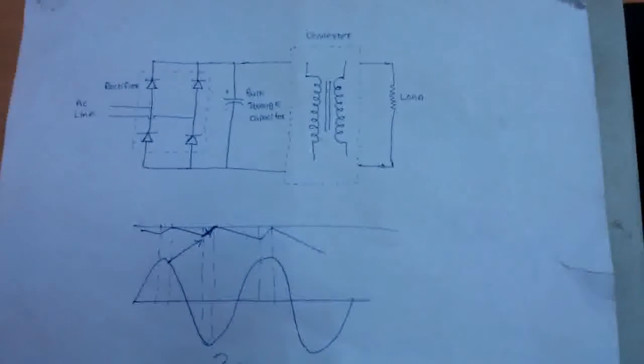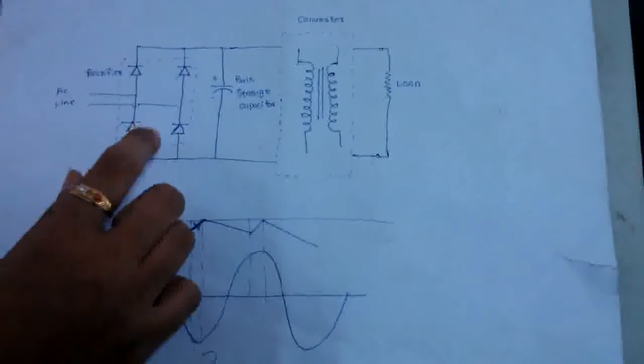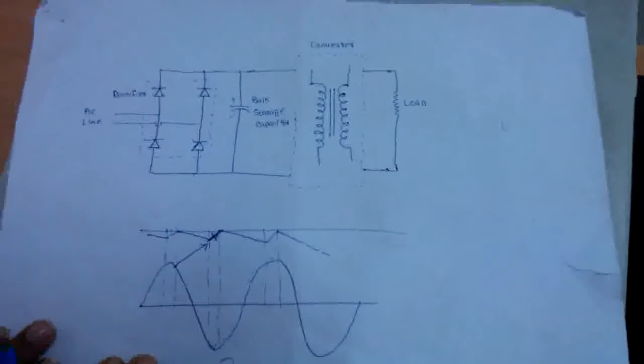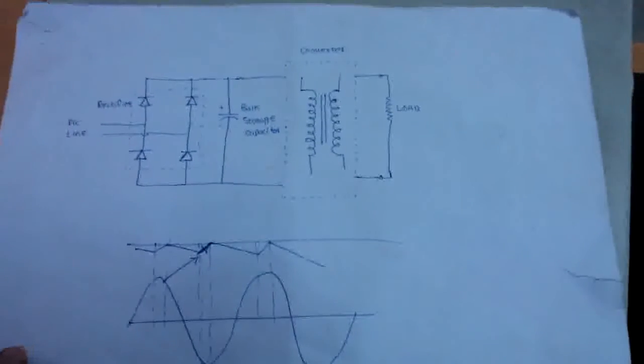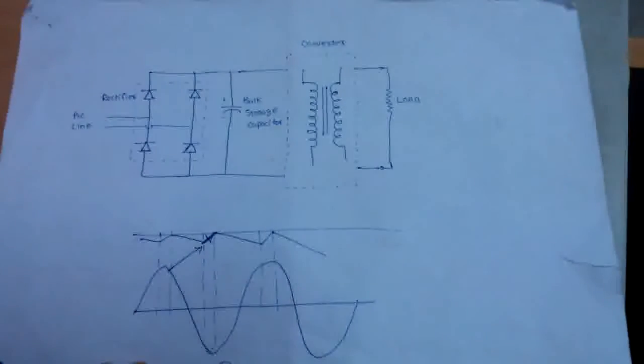In effect, a simple rectification technique draws power from the mains only when the instantaneous AC voltage exceeds the capacitor voltage. This occurs near line voltage peak and results in high charge current spike. Consequently, a poor power factor in the range of 0.5 to 0.7 is generated.